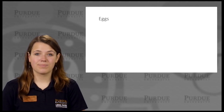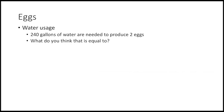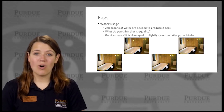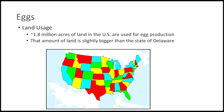Now for your two eggs. 240 gallons of water are needed to produce two eggs. What do you think that is equal to? 240 gallons of water could fill four large bathtubs — that's a crazy amount of water. About 1.8 million acres of U.S. land are used to farm eggs. That's slightly bigger than the state of Delaware.